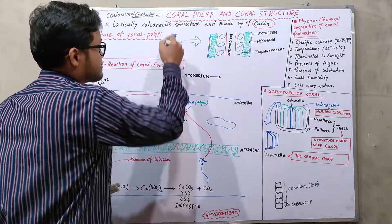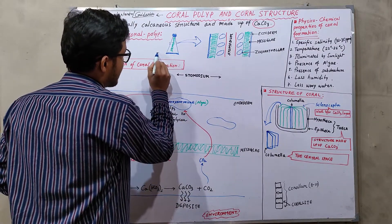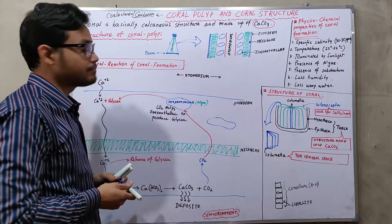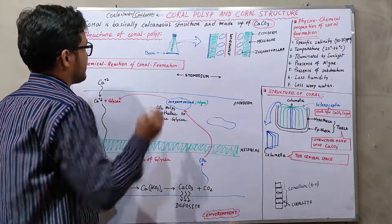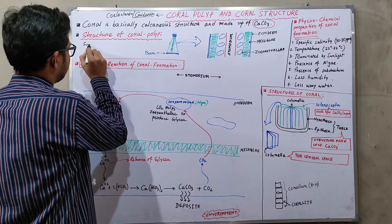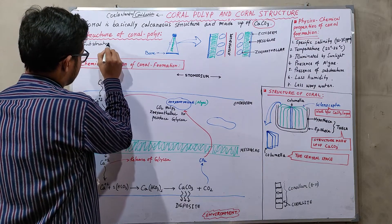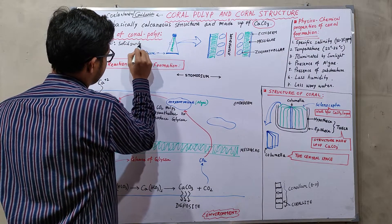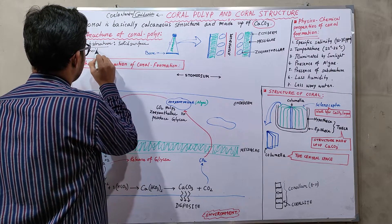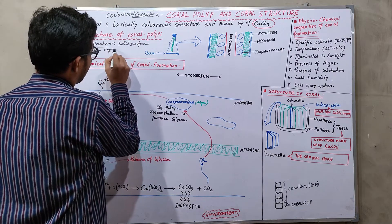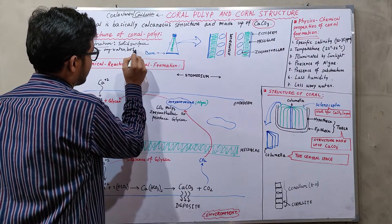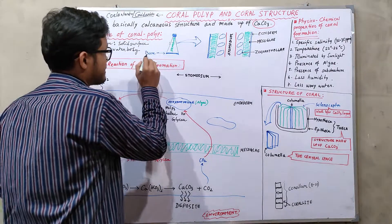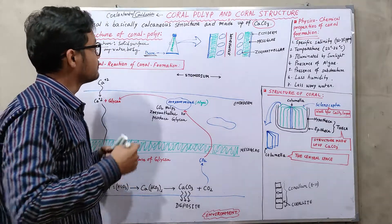Now let's look at the structure of the coral polyp. As you can observe, there is a base which attaches to a substratum. Substratum refers to a solid surface inside any water body. So this base is attached to the substratum — the solid surface present inside the water body.